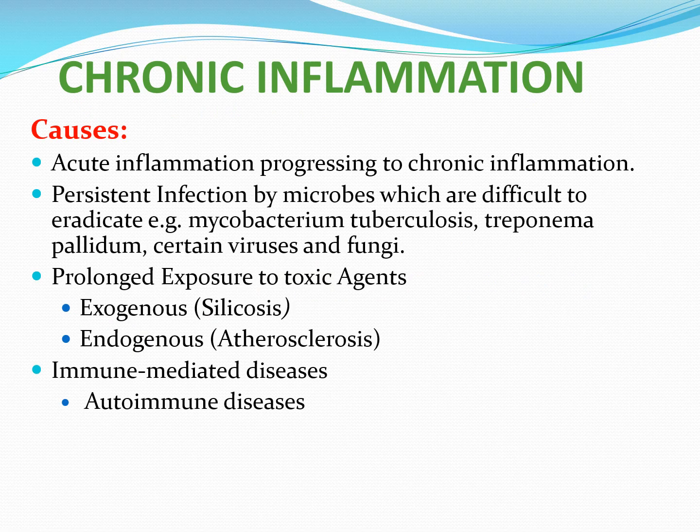What can lead to chronic inflammation? First, any acute inflammatory process that persists for a long period becomes chronic. Second, persistent infection by certain microbial agents — like Mycobacterium tuberculosis, Treponema pallidum for syphilis, and certain viruses and fungi. These microorganisms are difficult for our immune system to eradicate, so they remain within our tissues and lead to a chronic inflammatory response because the trigger stays for a long period of time.